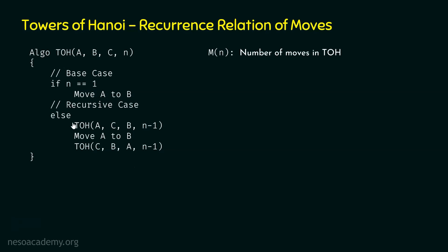If n is equal to 1, then m of n must be equal to 1. In the recursive case, we have TOH(A, C, B, N−1), then we have move A to B, and then we have TOH(C, B, A, N−1). Here we are calling TOH twice, and we can observe that we have n−1 in both cases. So in the recursive case, we will have 2 times m of n−1. We are not interested in the order of the pegs; we are only interested in the number of disks. If we have n disks here, we have n−1 disks in these two cases. So m of n must be equal to 2 times m of n−1 plus 1.